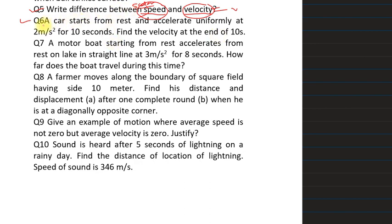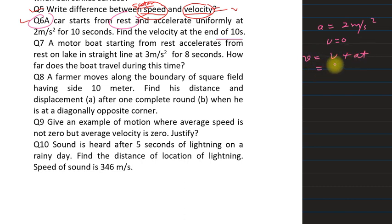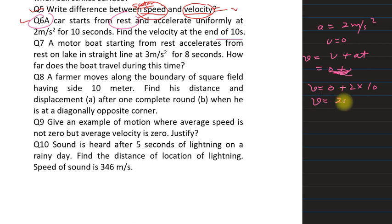Question 6: a car starts from rest and accelerates uniformly at 2 m/s². The car starts from rest so u = 0. We need to find the velocity at the end of 10 seconds. Using v = u + at: v = 0 + 2 × 10 = 20 m/s. The velocity after 10 seconds is 20 m/s.